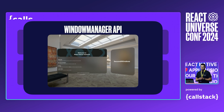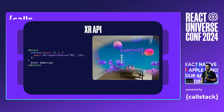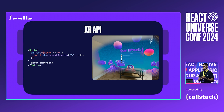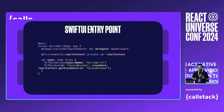We also introduced the window manager API that you can use to spawn and manage additional windows, and also pass and update data from your main window to the newly created one. The XR API allows you to blend your content with the real surrounding — it offers a new immersive space, which is a canvas that you can render into. React Native Vision OS uses a SwiftUI lifecycle; the app entry point is now app.swift instead of the default main.m, which was Objective-C.